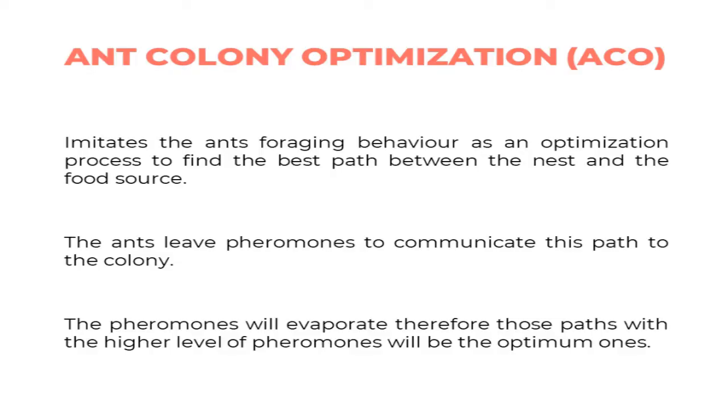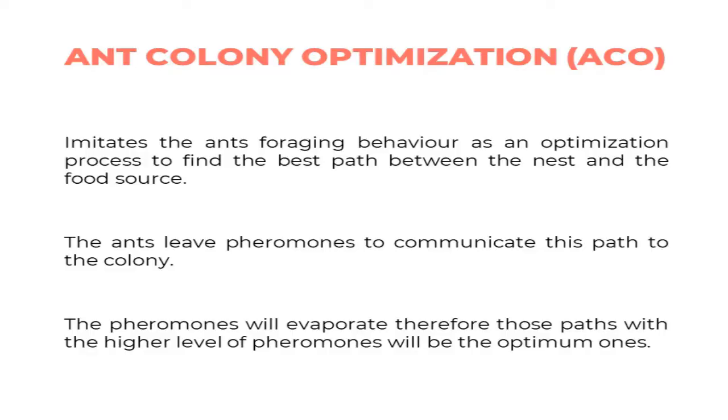Ants need to communicate — they let other ants know how they reached specific points and discovered the food source. This communication is performed via pheromones. Every time an ant follows a specific path, it leaves pheromones that show the path to other ants. These pheromones will evaporate over time, and those that are stronger — because more ants have been following that path — are the ones that define the shortest path.